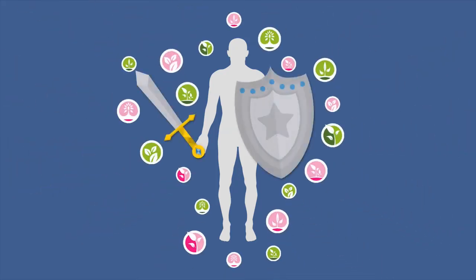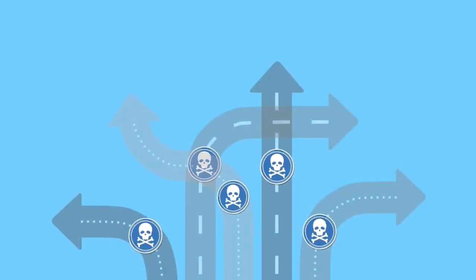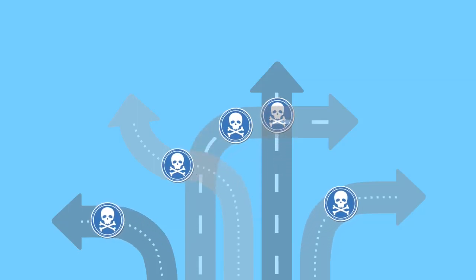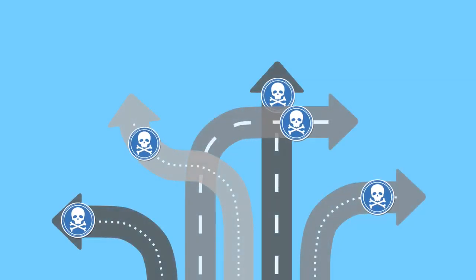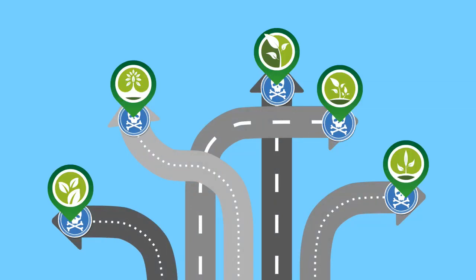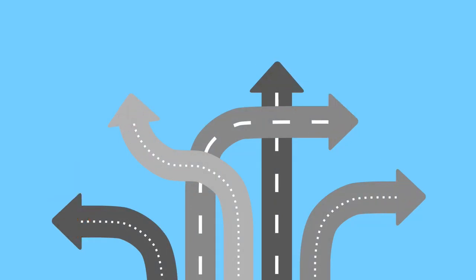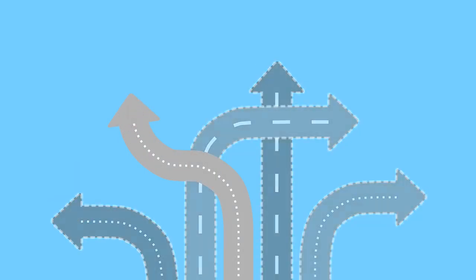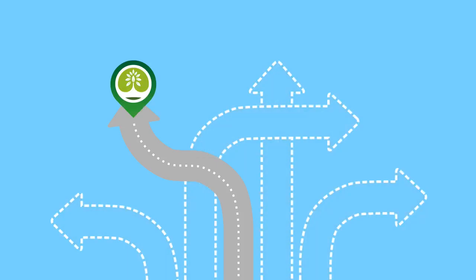Phytochemicals can defend us from the causes of cancer. Cancer develops through many different pathways. Every phytochemical works to inhibit a certain pathway that causes cancer. A single phytochemical can prevent one pathway, but not all.